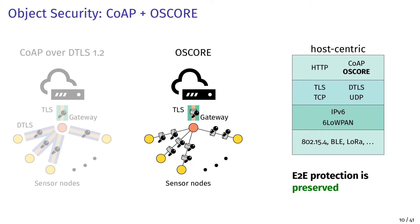The second deployment option uses CoAP with OSCORE, which is an extension to CoAP published by the IETF in summer 2019. In OSCORE, CoAP messages are encrypted and authenticated and then encapsulated into an outer CoAP message. This message is then sent through the gateway to the cloud, and an untrusted gateway is not able to peek into the protected object. This deployment option provides end-to-end protection.